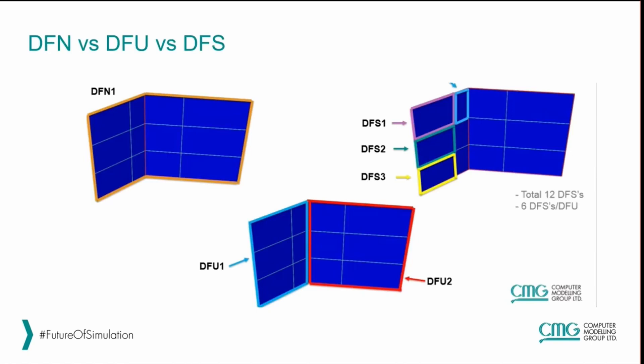When looking at DFNs, they can be divided into different portions or segments. The DFN will encompass all the fractures associated with a fracture network. Within that network we might have different discrete fracture units, or DFUs — here we have two DFUs making up one discrete fracture network. Each DFU can have its own properties such as different permeabilities, apertures, and compressibilities. Everywhere a DFU intersects the reservoir grid, it is further subdivided into discrete fracture segments, which are the units where flow is calculated through the network.